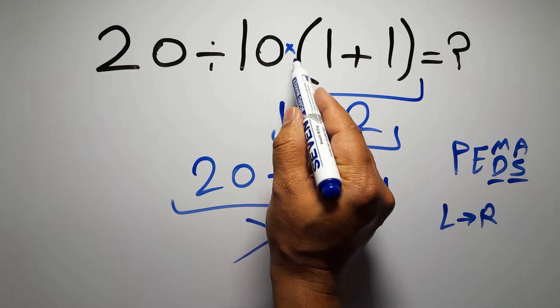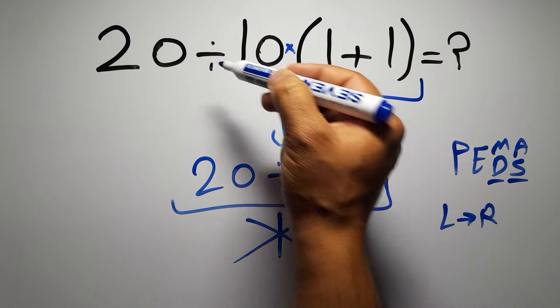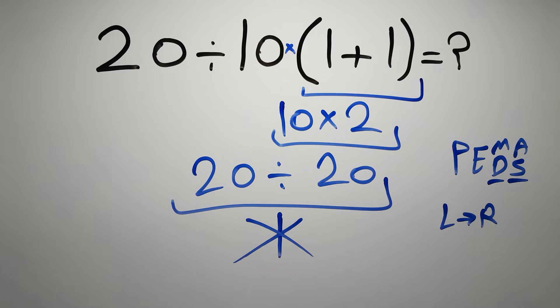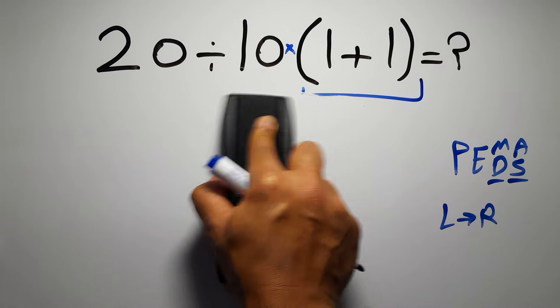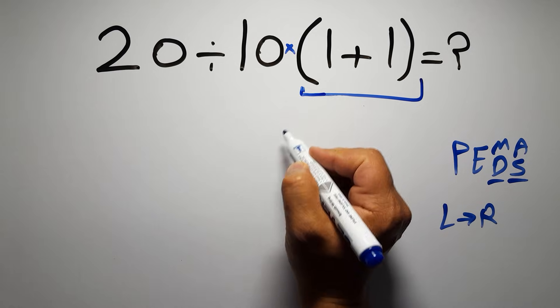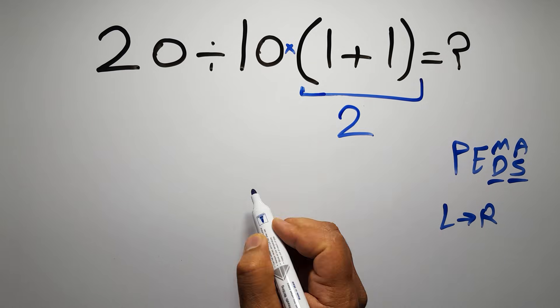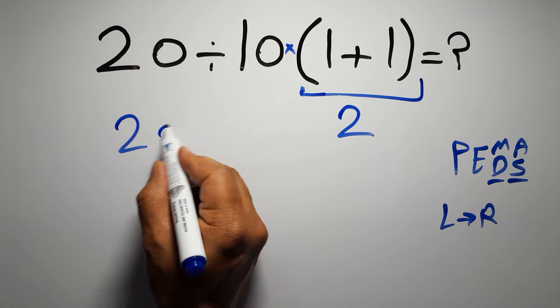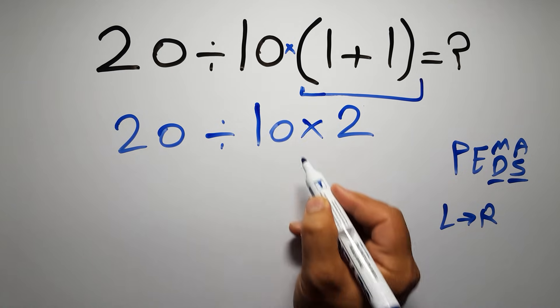So according to PEMDAS, first we have to do this parentheses, then this division, and finally this multiplication. If we do this multiplication before this division it is wrong. So first this parentheses: inside this parentheses we have 1 plus 1 which gives us 2, so 20 divided by 10 then times 2.